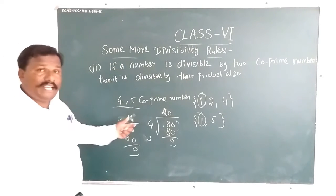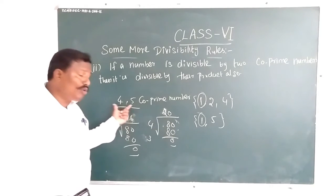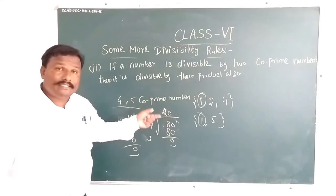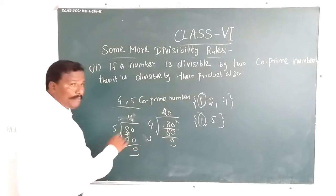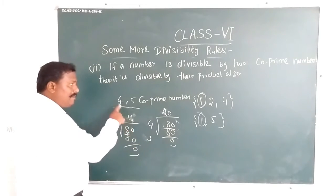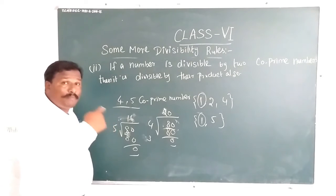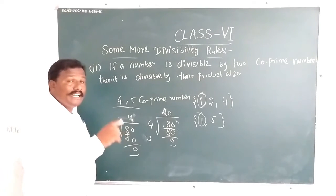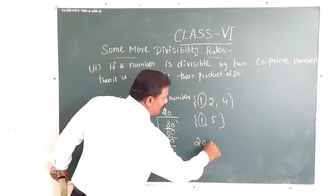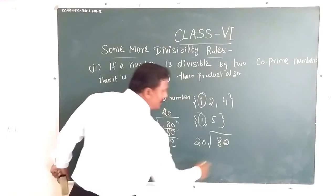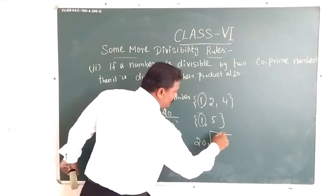As per the rule, if any number can be divided by two co-prime numbers, then you can also divide it by their product. So 80 is divisible by 4 and by 5. As per the rule, we can divide by their product also. The product of 4 and 5 is 20. If you divide 80 by 20, four 20s are 80. So it works.